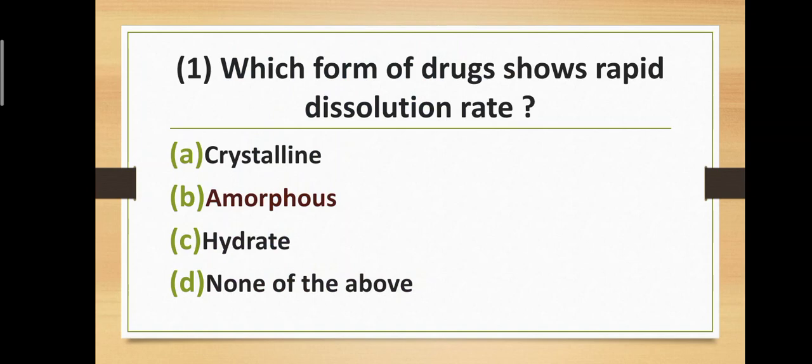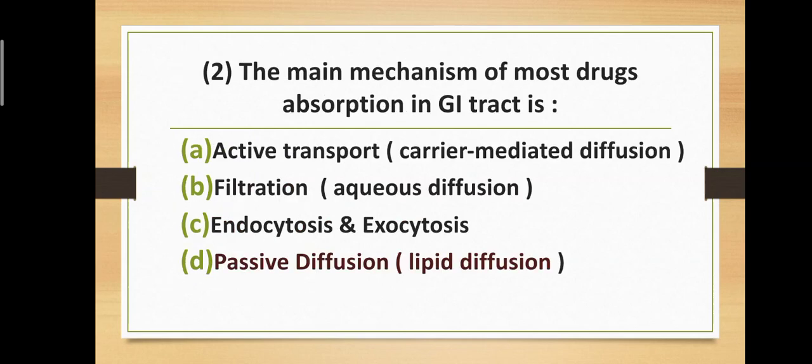Question number one: Which form of drug shows rapid dissolution rate? Option A: crystalline form. Option B: amorphous. Option C: hydrate. Option D: none of the above. The correct answer is option B — amorphous form. Amorphous form of drug shows rapid dissolution rate.